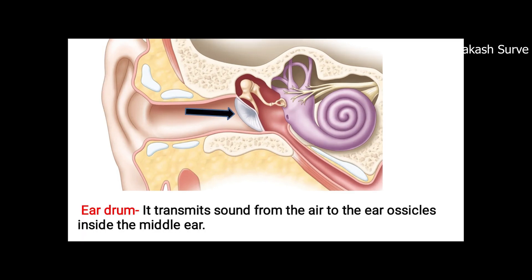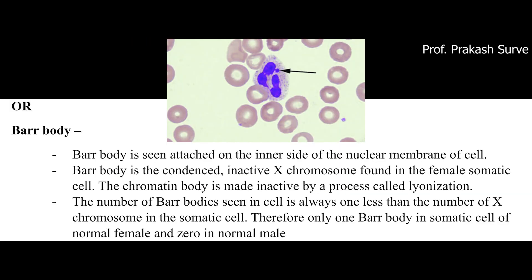Next is about the Barr body. Here either an OAR or Barr body will be there, which you have to identify.